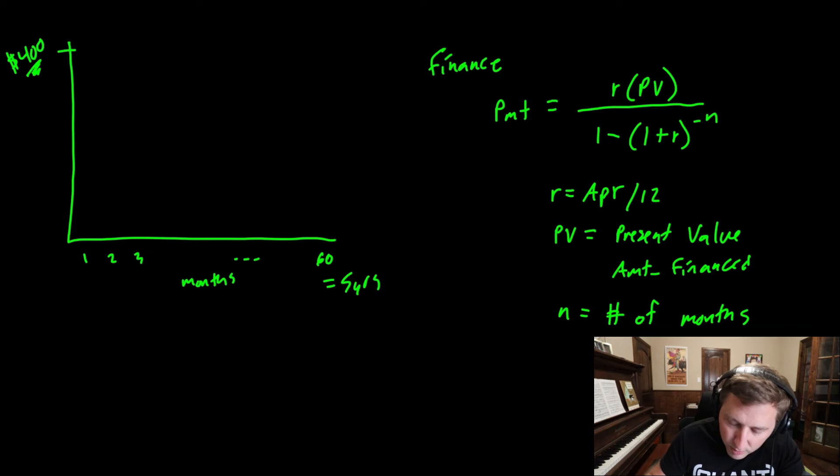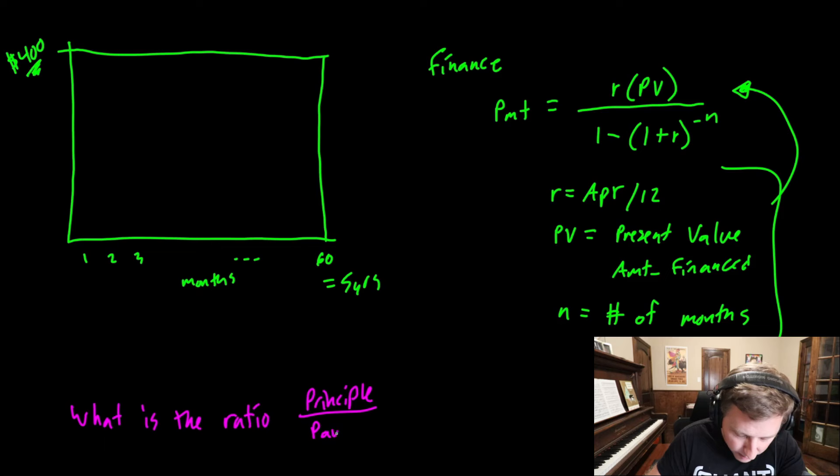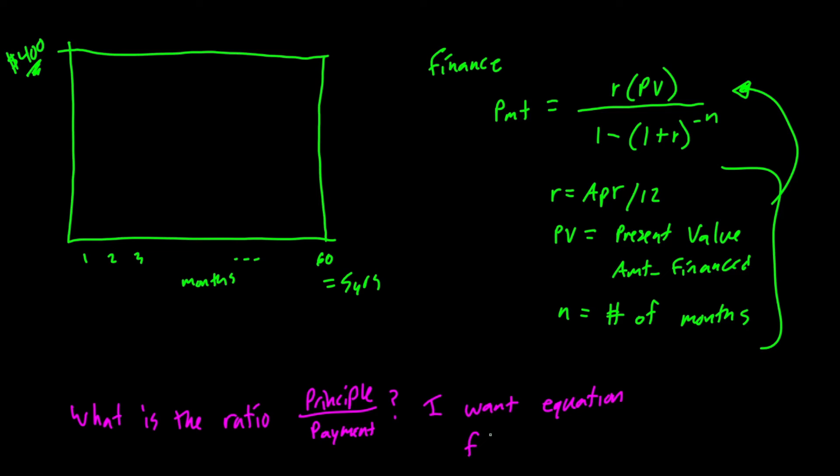Okay, so anyways, you can do all this. This is simple math. You can do it in Excel as well. But more or less, what we're trying to get to is we're trying to get to payment here and payment here is going to be $400. And every single payment is going to be $400.